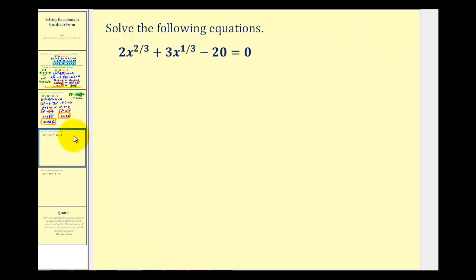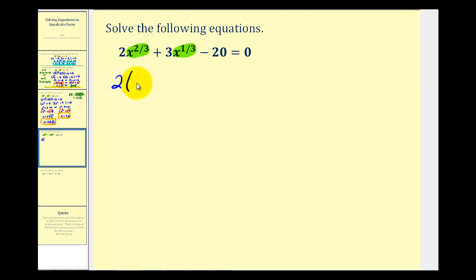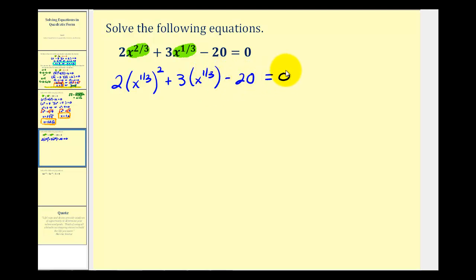Let's look at another example: two x to the two-thirds plus three x to the one-third minus 20 equals zero. The first step is to check if it fits the form of a factorable quadratic. If we square x to the one-third, we get x to the two-thirds, so it does. We can write this as two times x to the one-third, squared, plus three times x to the one-third minus 20 equals zero, and factor it as we normally would.